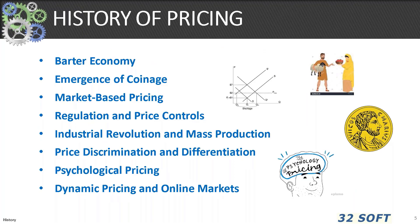Just a quick word about the history of pricing. It all started back with the barter economy, exchanging goods and services without money. That led to the emergence of coinage in Mesopotamia, Greece, and Rome, which brought more structure to pricing as a medium of exchange. We then saw market-based pricing based on supply and demand, government-imposed price controls as far back as the Code of Hammurabi in 1754, and on to the industrial revolution, price discrimination, the development of psychological pricing, and today's dynamic pricing using algorithms and data analysis.